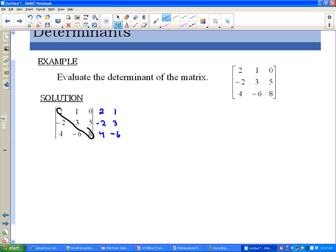And I also have this diagonal here which is 1, 5, 4, and then I have one more diagonal going this direction which is 0, negative 2, negative 6.